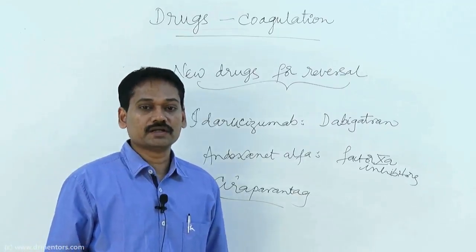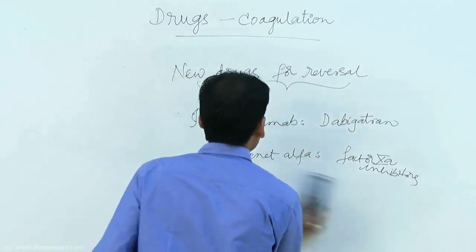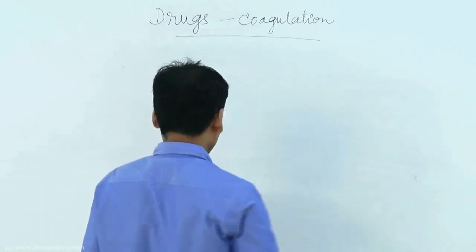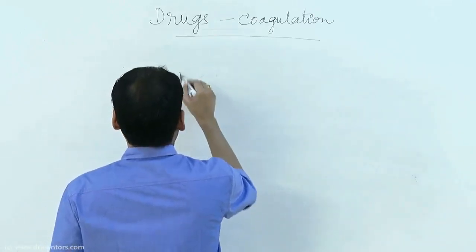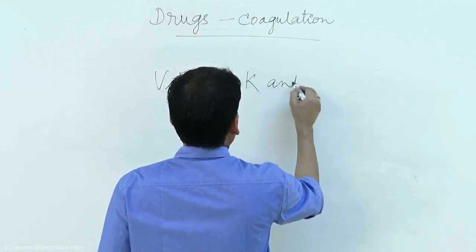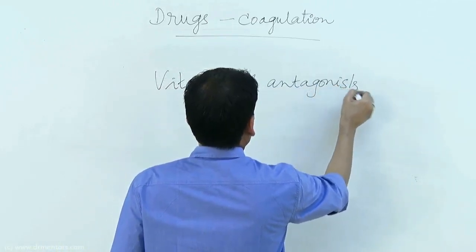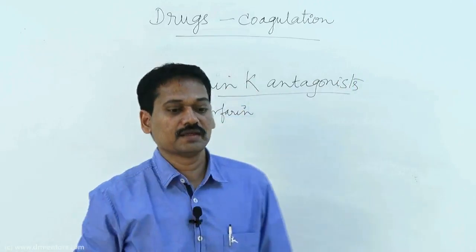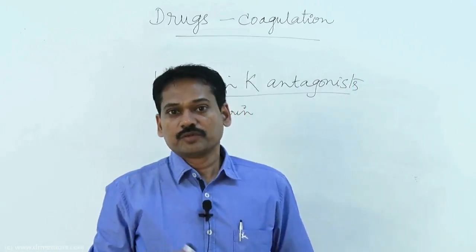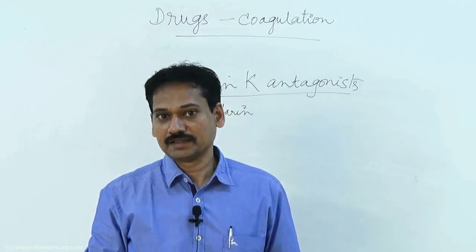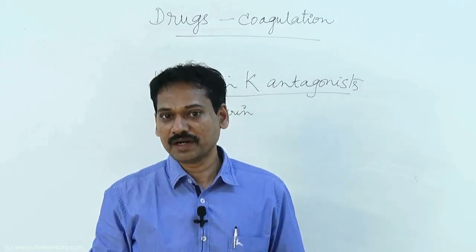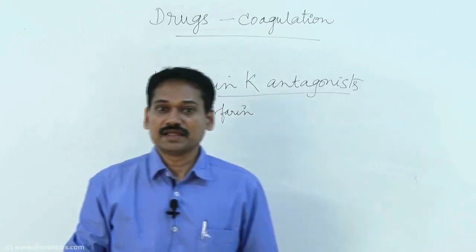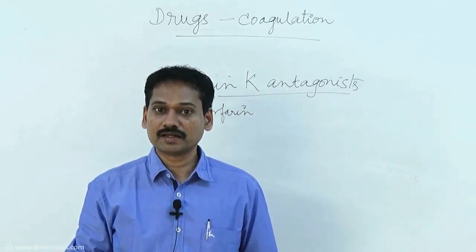Let us move on to the important traditional anticoagulant drug — the vitamin K antagonist. The prototypical drug is warfarin. Factors 2, 7, 9, and 10 are the important clotting factors dependent on vitamin K for their synthesis and activation, and this is exactly inhibited by warfarin.